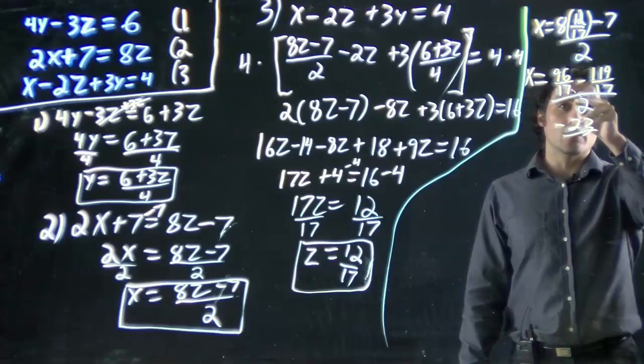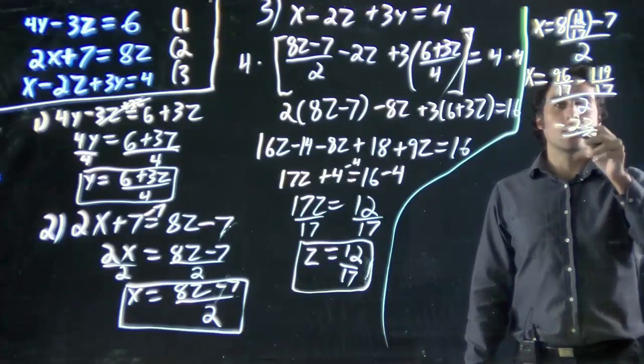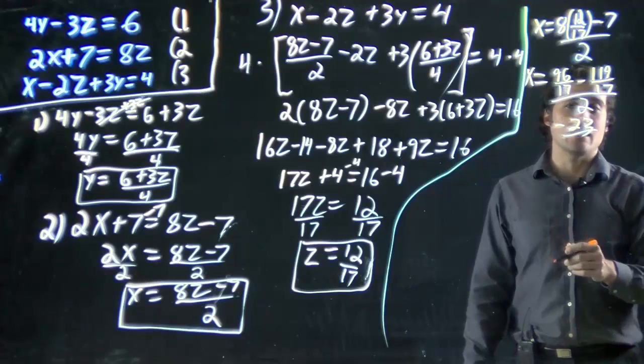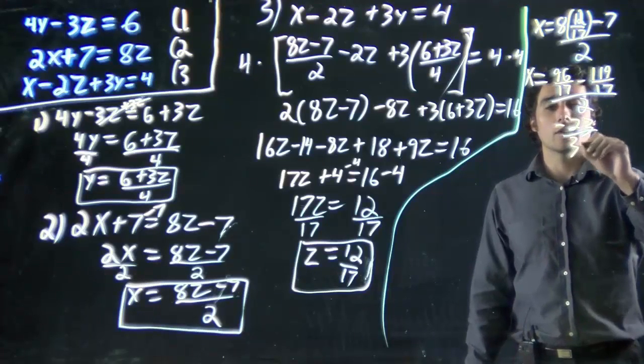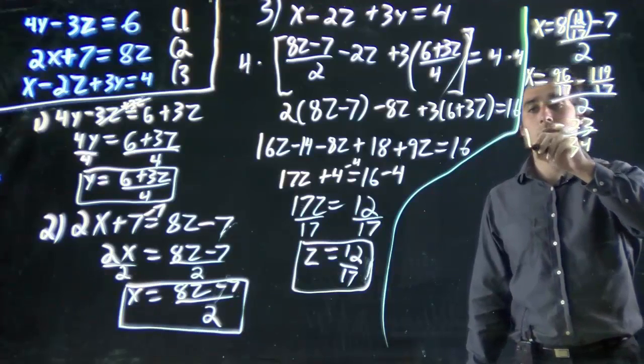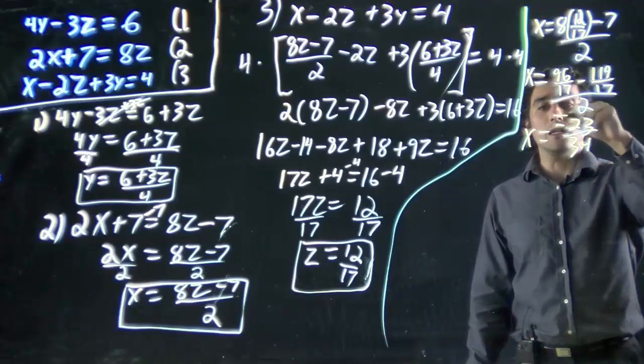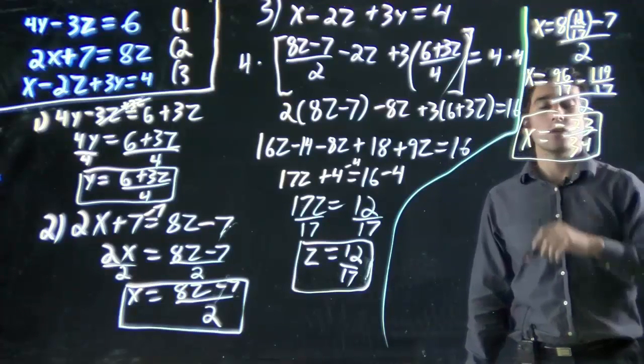Minus 23 over 17 over 2. That's the same as we bring the 2 in and multiply the 17 by it. So we've got over 34. x should equal minus 23 over 34.